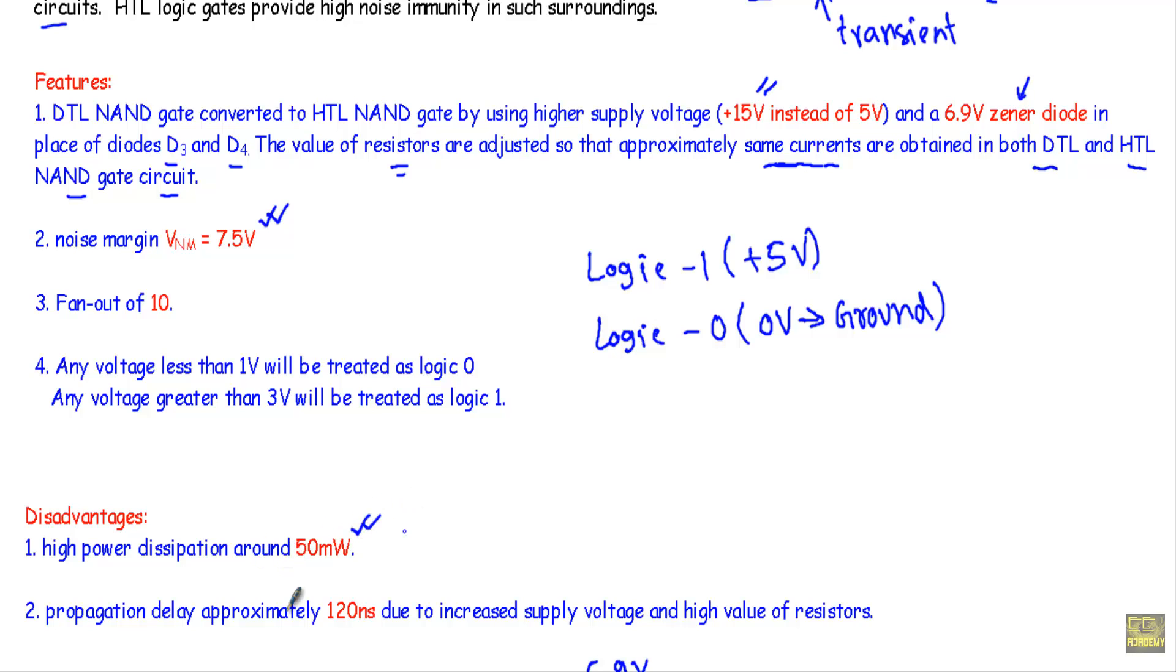And propagation delay will be approximately 120 nanoseconds due to increased supply voltage and high value of resistance. So it will have high propagation delay and large power consumed from the supply. That's it.